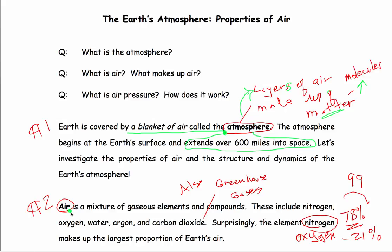What is air made of? It's a mixture of gaseous elements and compounds, specifically greenhouse gases. The main idea is the atmosphere begins at the Earth's surface and extends over 600 miles into space. What is the atmosphere? There it is.